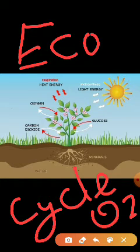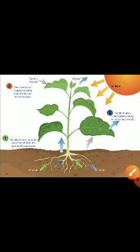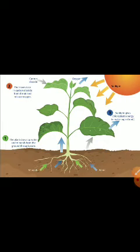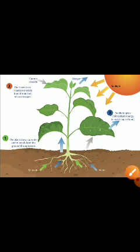Let us revise the process of photosynthesis, which comes in the category of the first type of nutrition — autotrophic nutrition — by which plants manufacture their own food as well as the food which is available in the form of green vegetables, fruits, and food grains for other living beings. So thank you very much for watching this video.